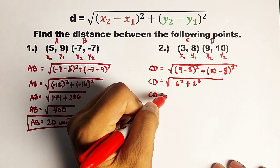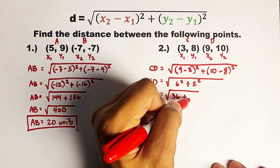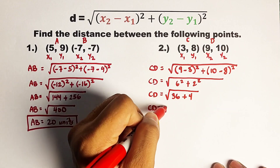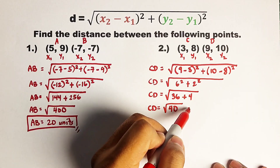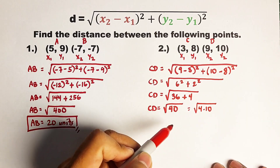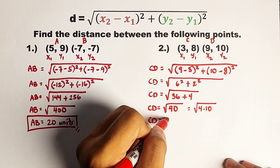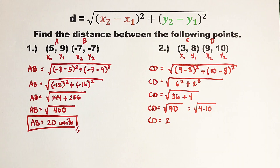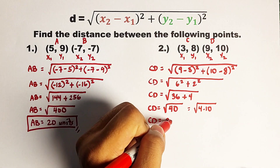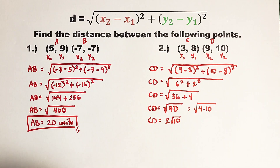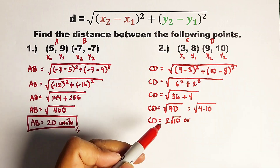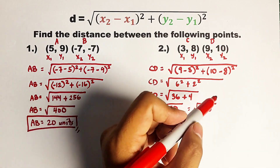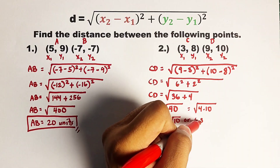Your CD equals the square root of: 6 squared is 36, plus 2 squared is 4, giving us the square root of 40. Now, 40 can be simplified by factoring: 4 times 10. The square root of 4 is 2, and since 10 cannot be simplified further, we get 2 square root of 10 units. Or, if your teacher asks you to represent this in decimals, 2 square root of 10 is also equal to approximately 6.32 units.